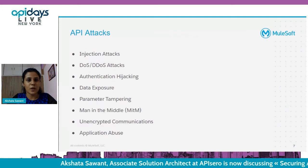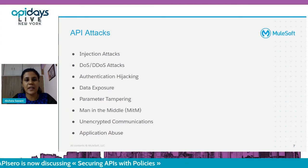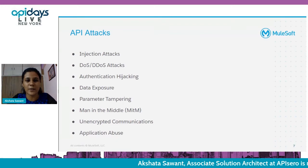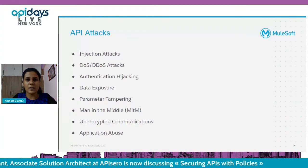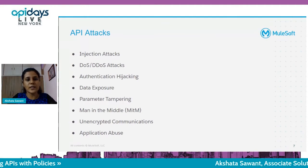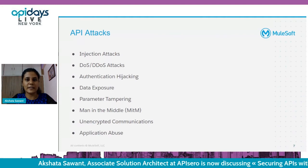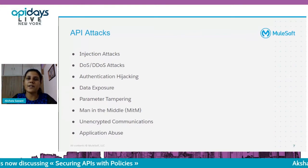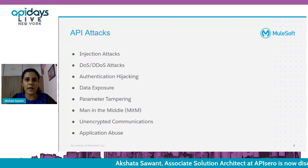What are the different API attacks? The most commonly identified are injection attacks, denial of service attacks, authentication attacks, and data exposure. These are quite frequent and are the result of the security threats we identified. The major topic here is securing APIs with policy — how our APIs will be more secured and how we can achieve it using policies.